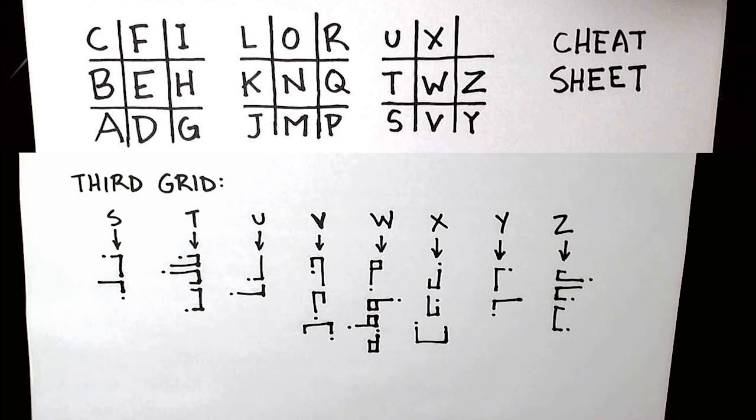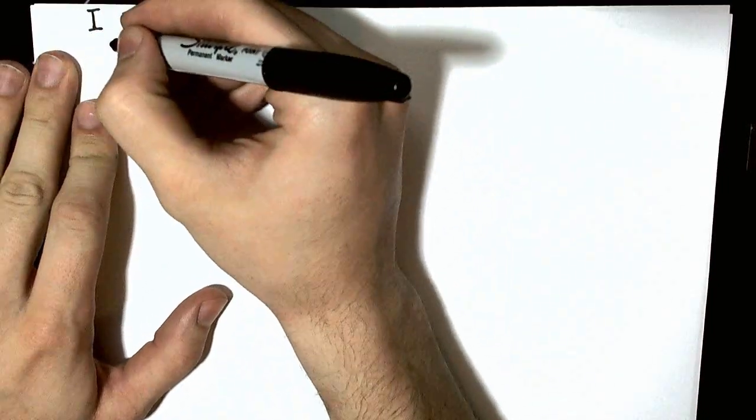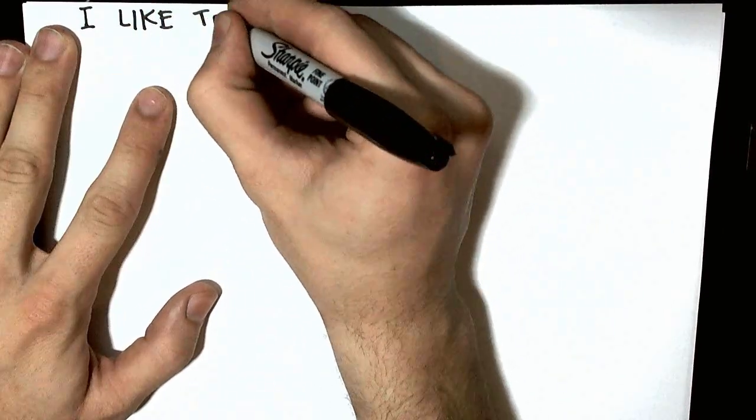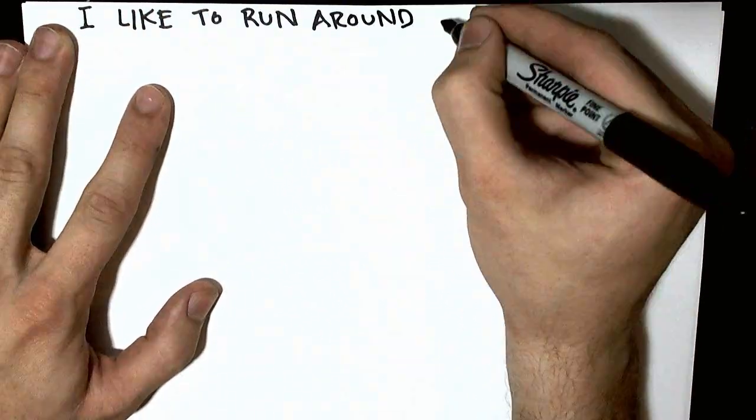For your enjoyment, well, enjoyment plus learning, I guess, I'm now going to write a sentence for you a few times in Elian, just so you can see what it looks like. Alright, so the first sentence that comes to mind is, I like to run around in circles.